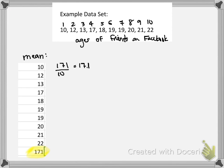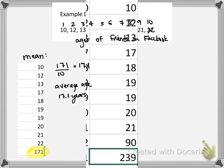That means the average age in this sample of 10 friends is about 17 years of age. Now we're going to change this data set — we're going to delete the 10th data point, which is 22, and make it an outlier: a value that is very, very far away from the rest of the values.